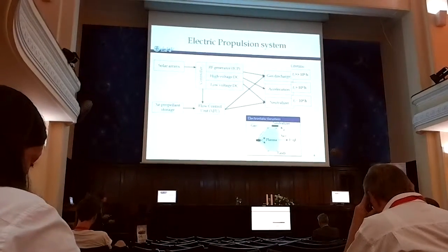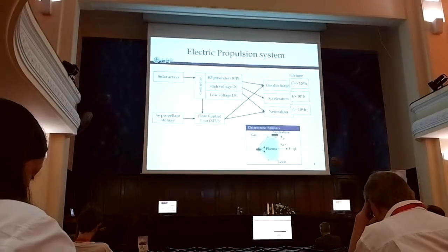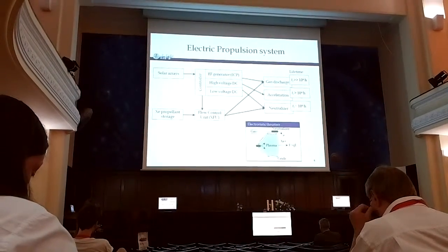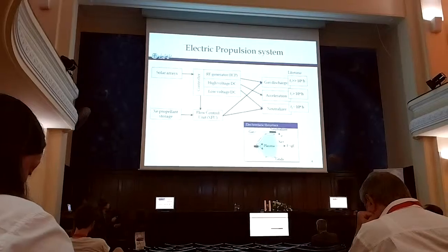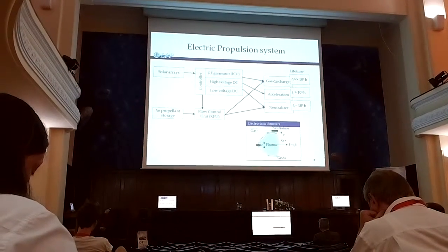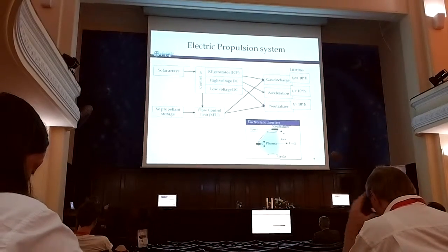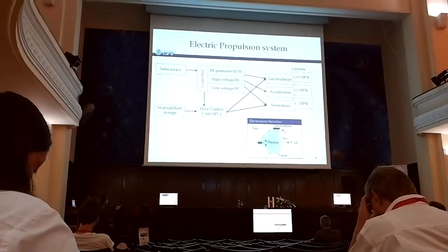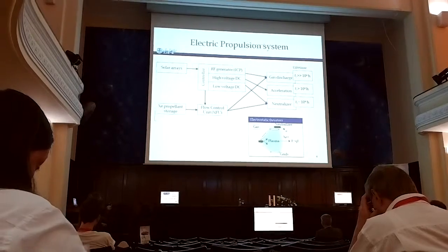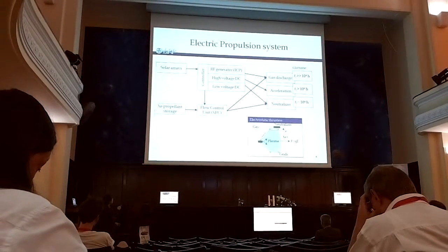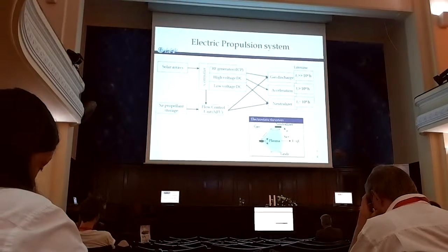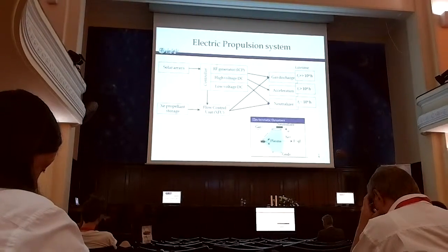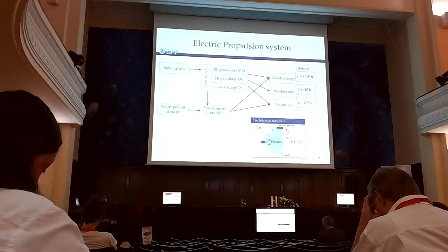And I should say that this system is not just a thruster, it's quite complicated, and it's very simplified, these schematics, what you need to do to have an operated thruster. So you have your gas discharge, you need to provide some power, for example, if it's ICP discharge, you need to have a generator, for acceleration you need to have a high voltage source, a low voltage source for a neutralizer, also you have a flow controller, you have storage system, an electrical system, and it's quite complicated system, but it works.